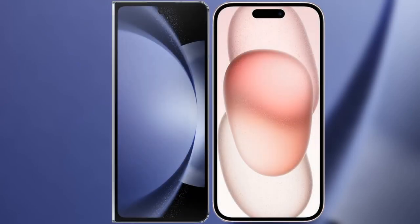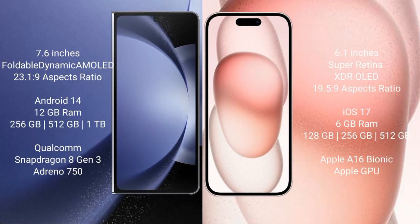I will compare the new Samsung Galaxy Z Fold 6 with iPhone 15. Samsung Galaxy Z Fold 6 comes with a 7.6-inch foldable dynamic AMOLED display with an aspect ratio of 23:19. iPhone 15 has a 6.1-inch Super Retina XDR LED display with an aspect ratio of 19:5:9.